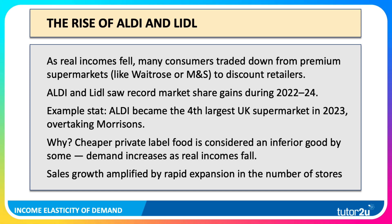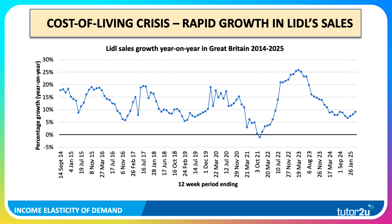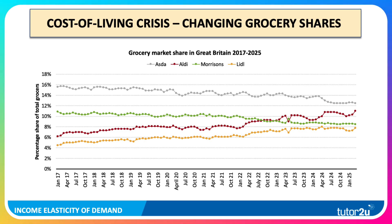Aldi and Lidl both saw record market share gains during 2022 to 2024. In fact, in 2023 Aldi became the fourth largest supermarket in the UK, overtaking Morrisons. Some of that was because of this income elasticity of demand effect — people switching their spending — but sales growth was also amplified by rapid expansion in the number of stores. This chart shows Lidl's year-on-year sales growth, clearly affected by lockdown and the pandemic in 2020-21, but during the cost of living crisis year-on-year sales growth rose above 25% at one stage. Now it's come down but it's still growing at close to 10% a year. You can see that Lidl and Aldi have seen their market share in the UK grocery market continue to climb, largely at the expense of Asda and Morrisons. Aldi overtook Morrisons in 2023 and that gap is widening; indeed, Lidl is likely to overtake Morrisons in the near future.